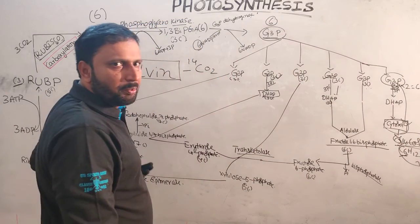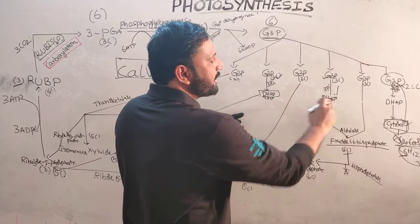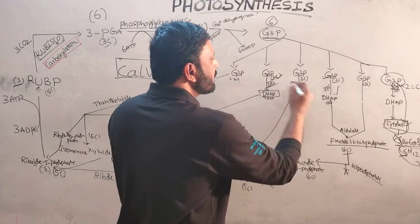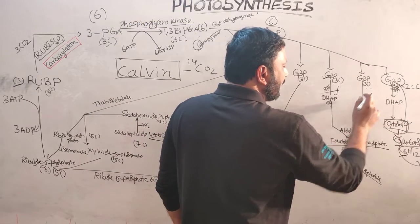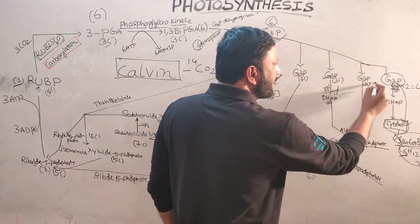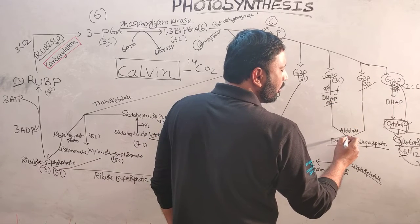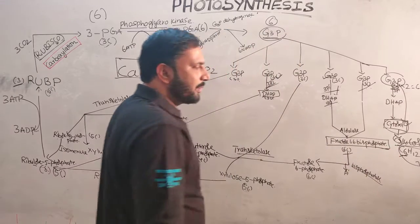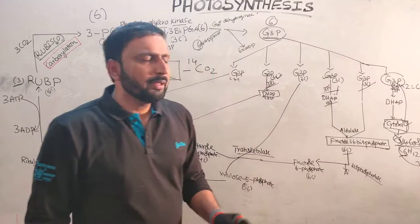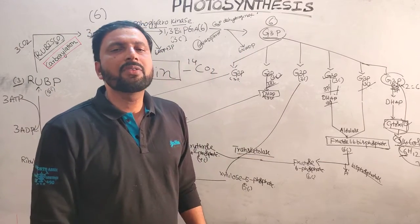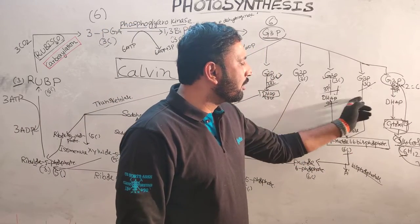Among the five G3Ps (in the simplified three-RuBP version), two are isomerized to DHAP (dihydroxyacetone phosphate) in the presence of triose phosphate isomerase. Then one G3P condenses with one DHAP in the presence of aldolase to form fructose-1,6-bisphosphate. In the C3 pathway, when one product is formed the enzyme is aldolase; when two products are formed the enzyme is transketolase.